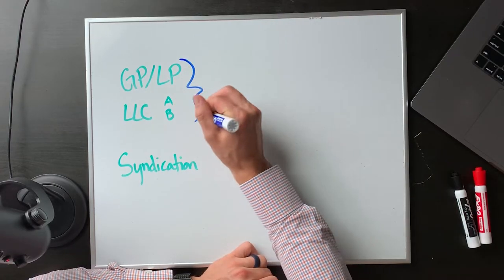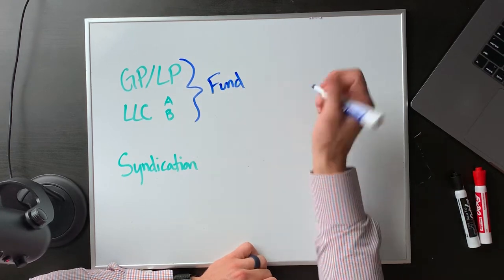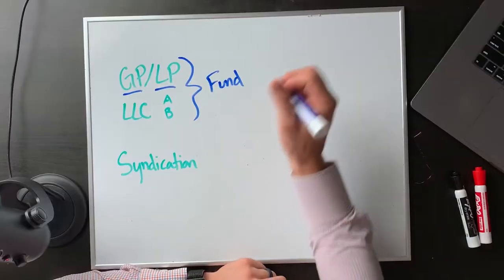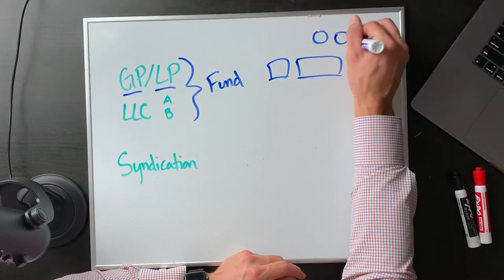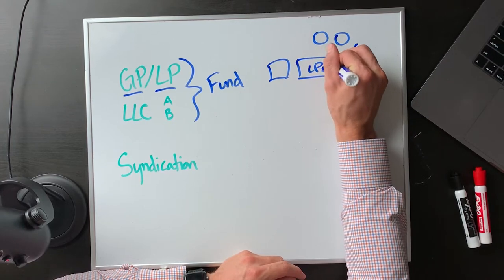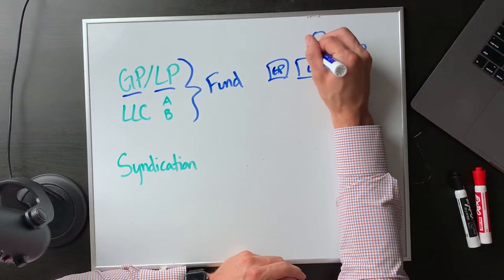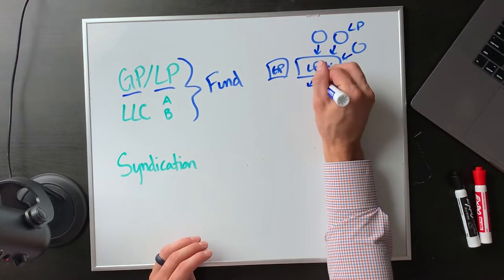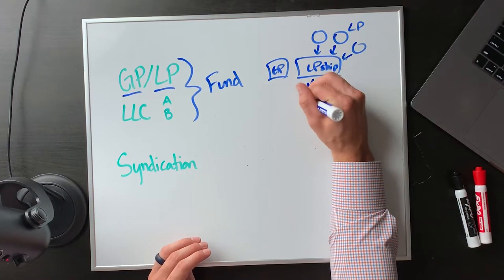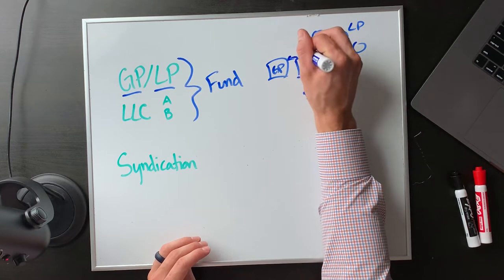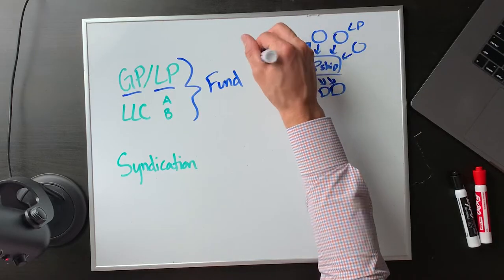Both of the top structures are going to be fund structures. This is your general partner, limited partnership structure. The GP manages the limited partnership or the fund, and limited partners invest into the limited partnership. The general partner manages that fund. This is your limited partnership, this is your general partner — that's you. All your LPs invest into that limited partnership, which then goes and makes investments, buys up assets. When those assets make money, they flow to the limited partnership and split between the general partner and limited partners.